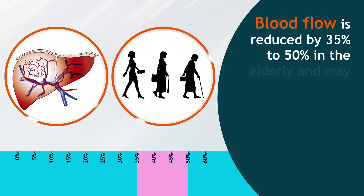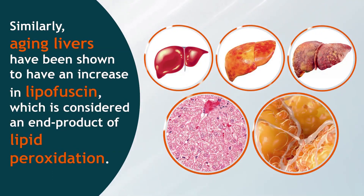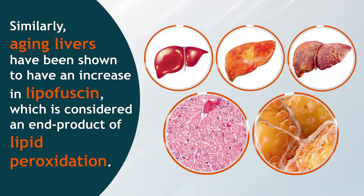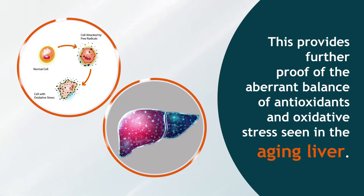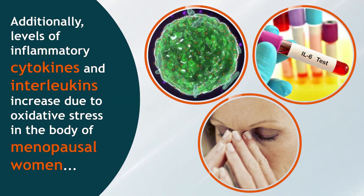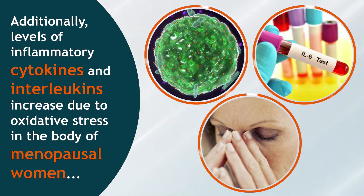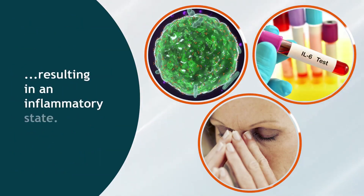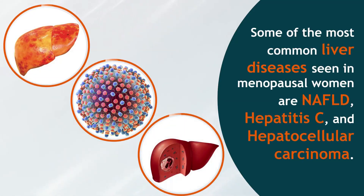Aging livers have been shown to have an increase in lipofuscin, which is considered an end product of lipid peroxidation. This provides further proof of the aberrant balance of antioxidants and oxidative stress seen in the aging liver. Additionally, levels of inflammatory cytokines and interleukins increase due to oxidative stress in the body of menopausal women, resulting in an inflammatory state.